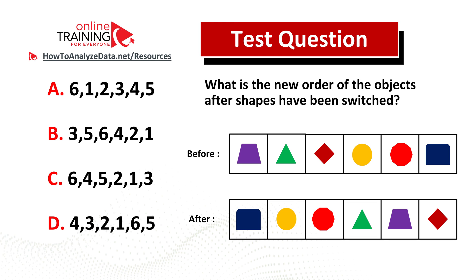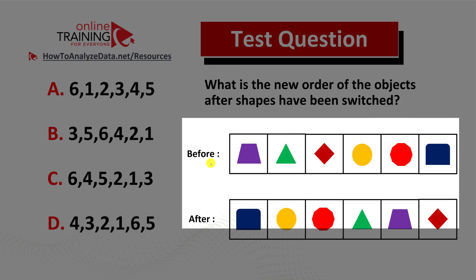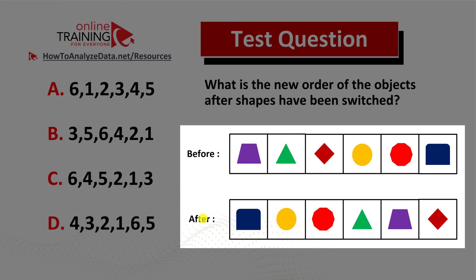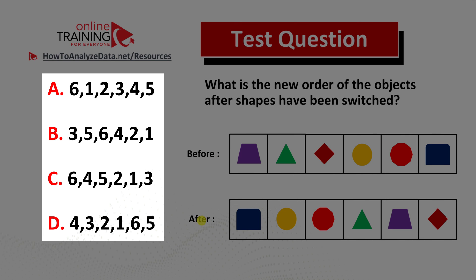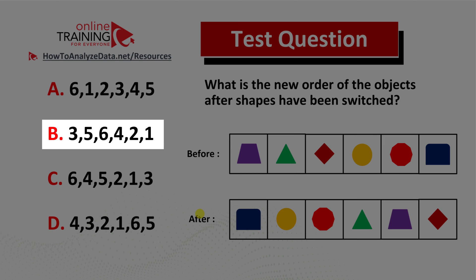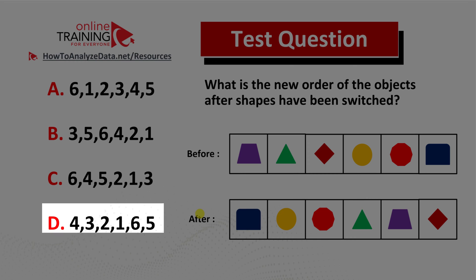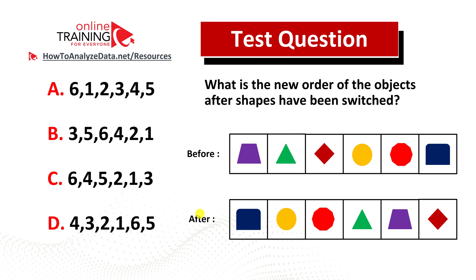Here is a tricky question from the real test, but I have a feeling you might come up with the answer on your own. What is the new order of the objects after shapes have been switched? You're presented with two sets — before and after — each with six objects. The four choices are: choice A six one two three four five, choice B three five six four two one, choice C six four five two one three, and choice D four three two one six five. Do you think you know the answer?